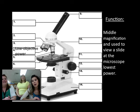This is the low objective power, and the color of the objective is yellow. It's our middle magnification, and we use it after our scanning power if we cannot see what we're trying to look for.